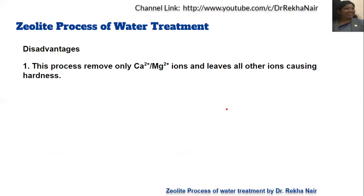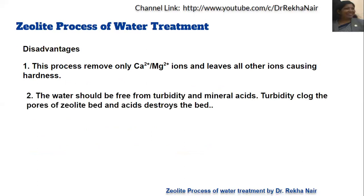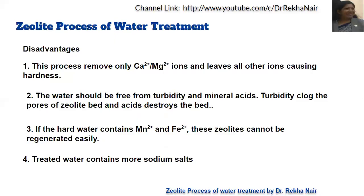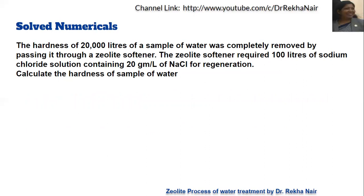There are some disadvantages as well. The process can remove only calcium and magnesium ions; all other ions are left over. The water must be free from turbidity, otherwise the turbidity will clog the pores of the zeolite bed. Mineral acids must also be absent, as acid can destroy the bed. In the case of lime-soda, there were no such problems. Additionally, if the hardness-producing ions include manganese and iron, the corresponding zeolites formed cannot be regenerated easily, making regeneration difficult. The treated water also contains more sodium salts.